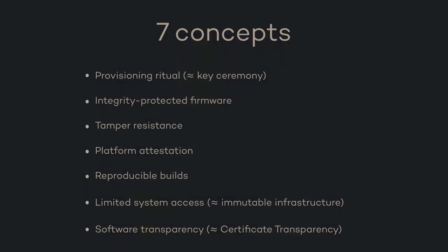System transparency has the goal of making the software running on a remote server that processes third-party data inspectable by that particular third party. To do that, we propose seven concepts. The first one is that we need some kind of provisioning ritual, because these servers are hard to get a handle on. We have this intransparent cloud, and what we need to do is give every one of these servers a unique platform identity, so we can decompose this cloud into individual servers, which allows us to make specific statements about specific servers.